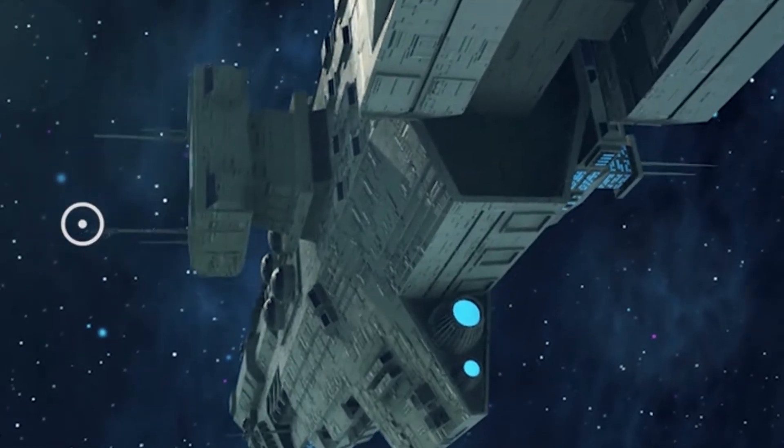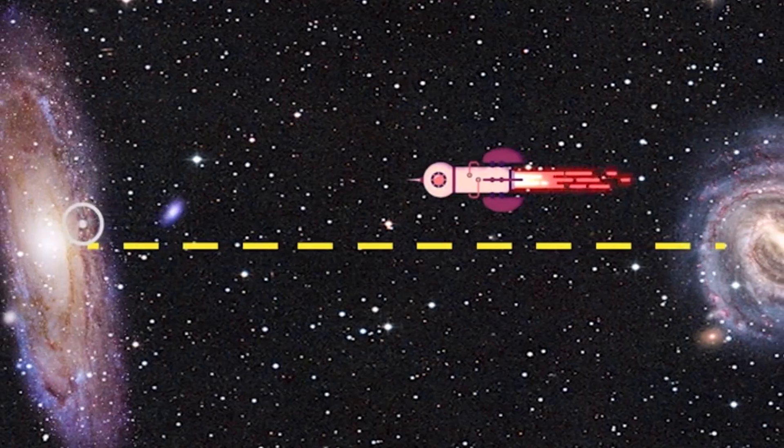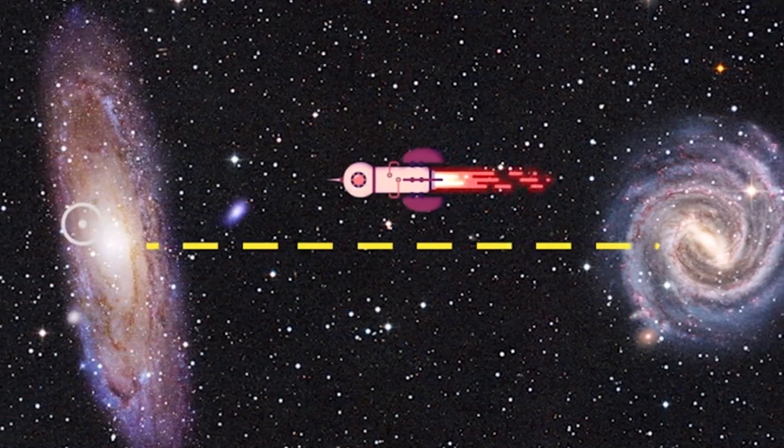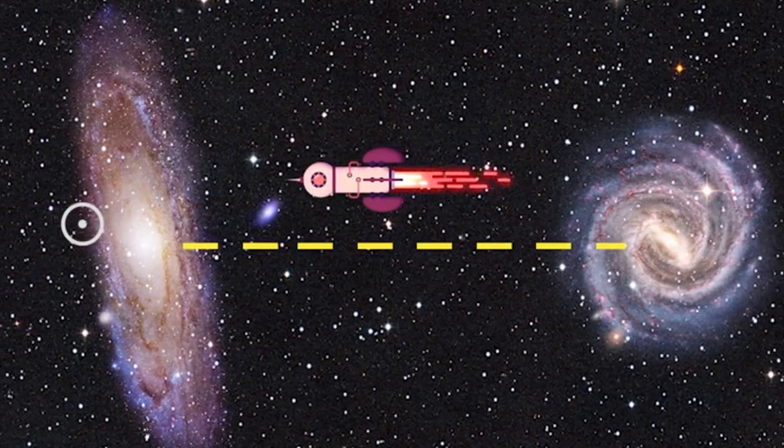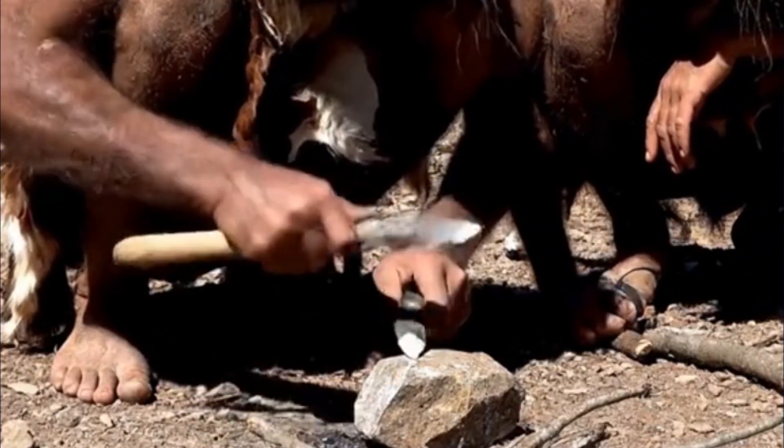A time machine for astronomers. When we observe Andromeda, we're seeing it as it was 2.54 million years ago, the time light took to reach us. At that moment on Earth, humans didn't yet exist. Only Homo habilis or early ancestors.